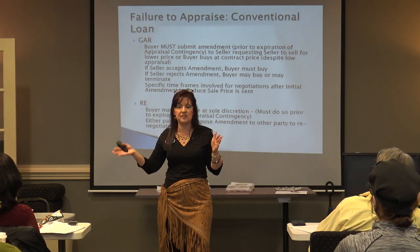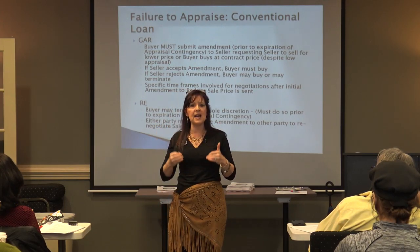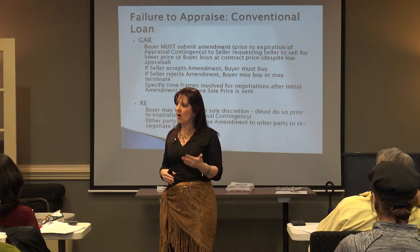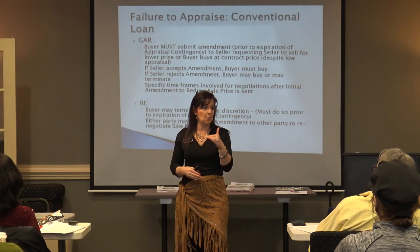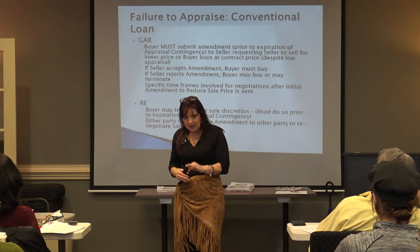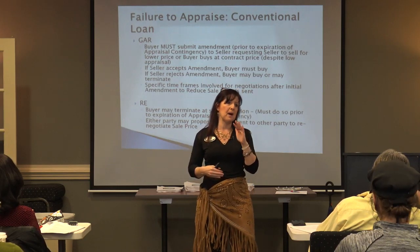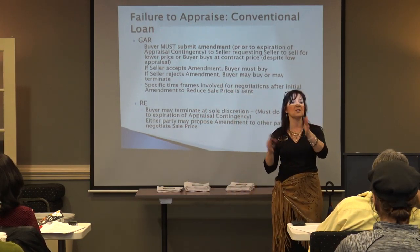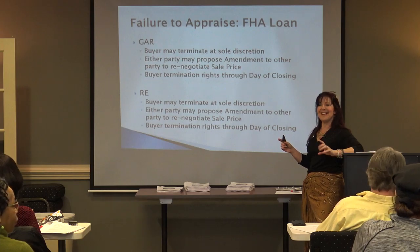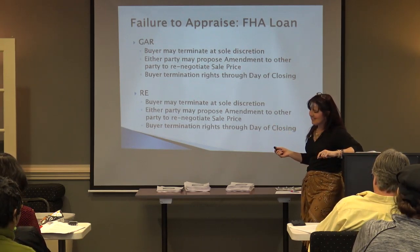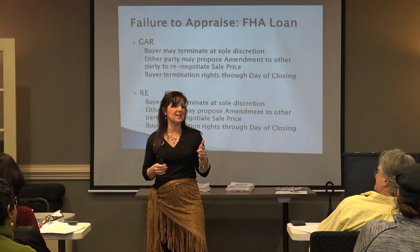RE form, conventional loan. Appraisal comes in low. You still have that negotiated time frame — 21 days, 28 days, whatever. But under the RE form conventional loan, if the appraisal comes in low, the buyer has the option of terminating right then and there. You do not have to give the seller the option of selling it lower. You can just terminate, walk, and get your earnest money back. The buyer may give an amendment offering to sell lower, but the buyer has termination rights immediately upon a low appraisal as long as it's done within the time frame. Big difference.